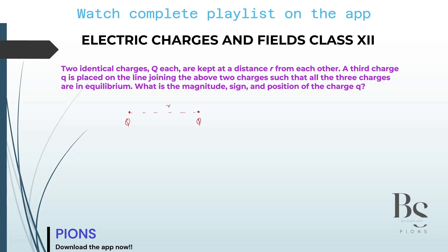A third charge small q is placed on the line joining the above two charges such that all three charges are in equilibrium. Very important. This question has been repeated many times. There is a third charge small q placed on the line joining the two charges such that all of them are in equilibrium.